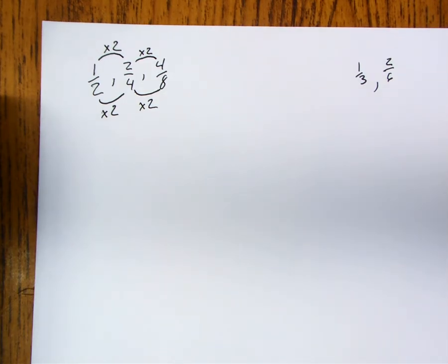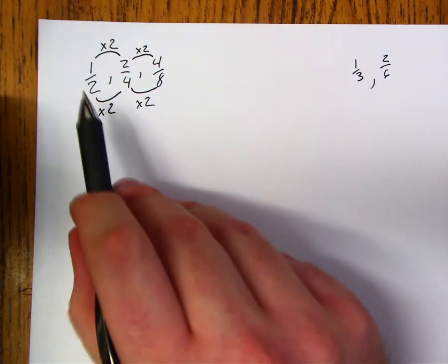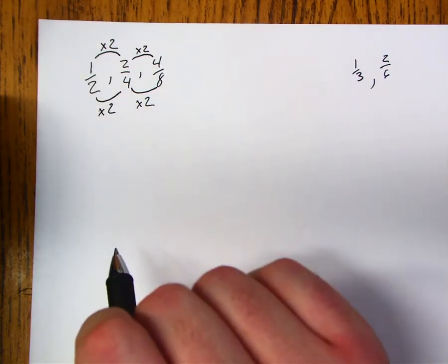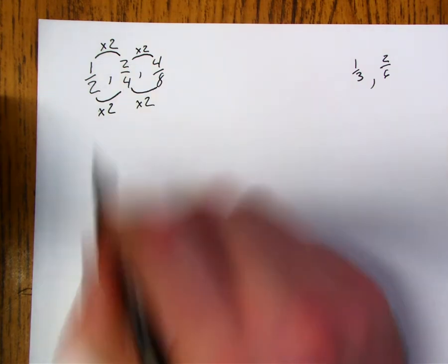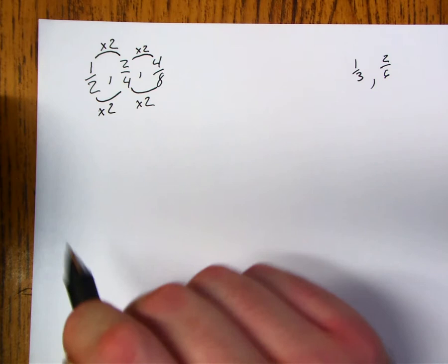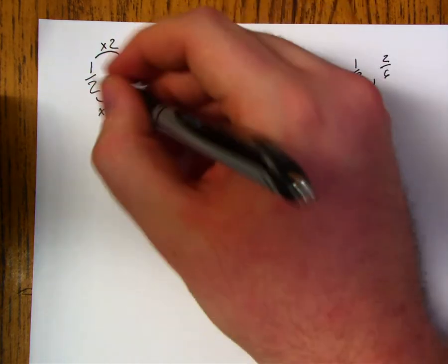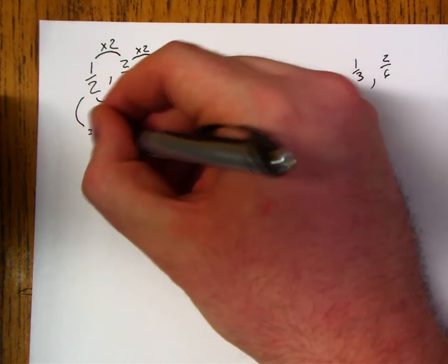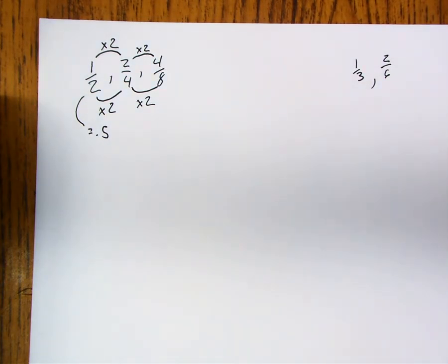Another way that you may have seen whether or not these were equivalent is you may have just simply looked at their decimal approximations. 1 over 2, that's going to be 0.5. 2 over 4, that is also 0.5. And 4 divided by 8, that's going to be 0.5 again. That's a handy method if you had your calculator handy. And so if you use that, way to go there too. We can say that these are just all equal to 0.5.